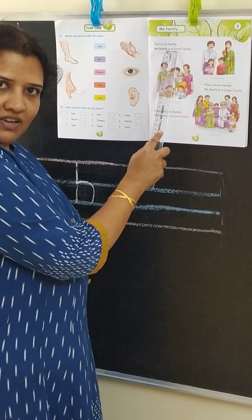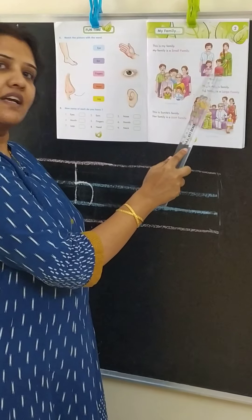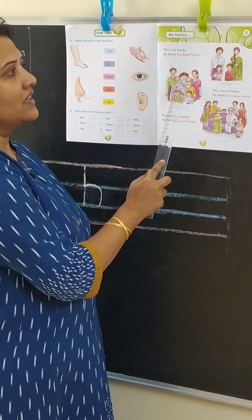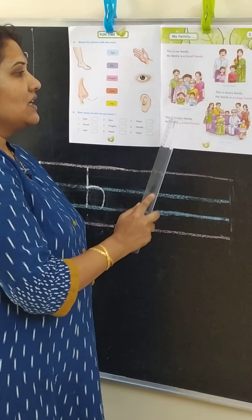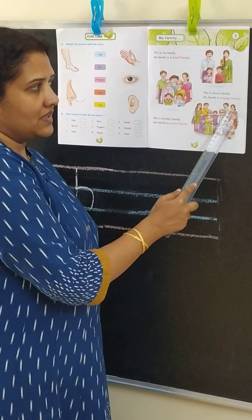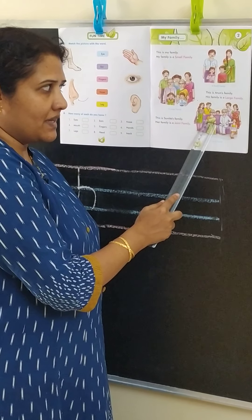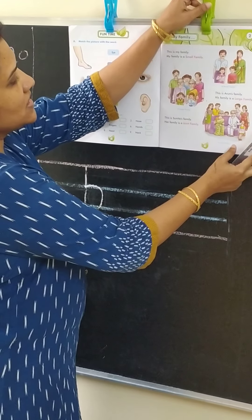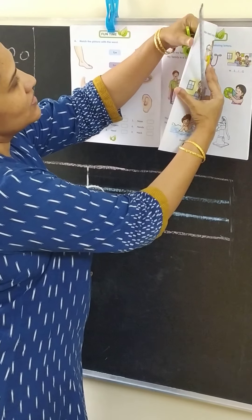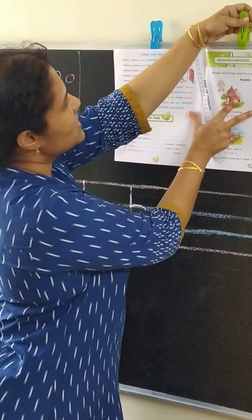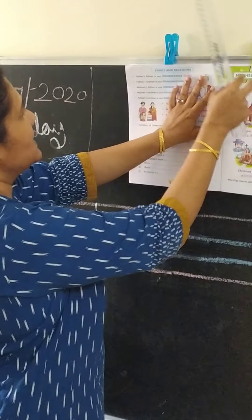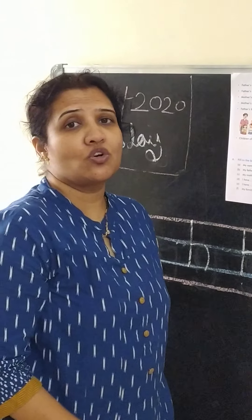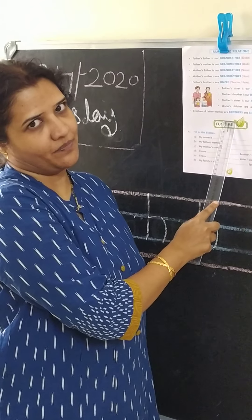Let's see one more time. Now let's turn to page number 6. Now on page number 6, we are going to say what you call your grandparents and your uncle and auntie.